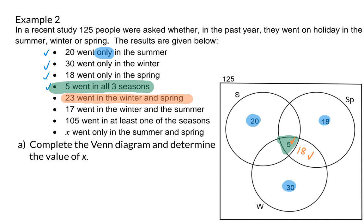Next, we are given that 17 people went on holiday in the winter and the summer. And once again, the word only does not appear here. So we take the 17, subtract the 5 that went in all three seasons, to get to 12 that only went in winter and summer.